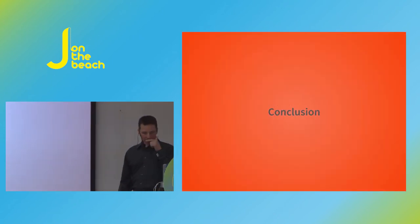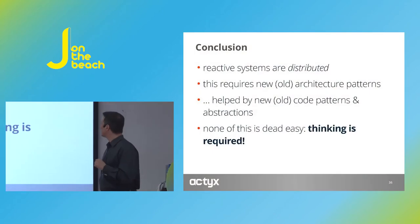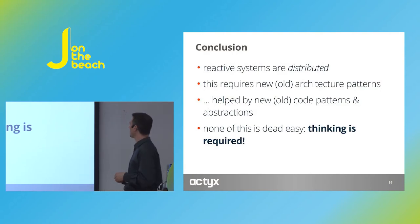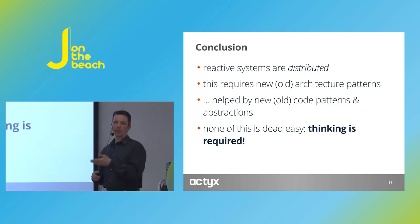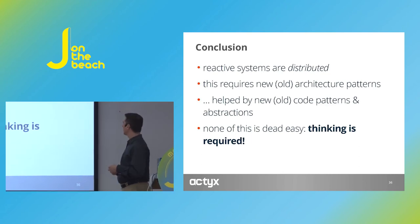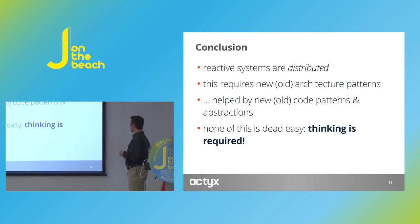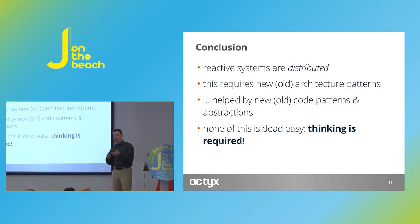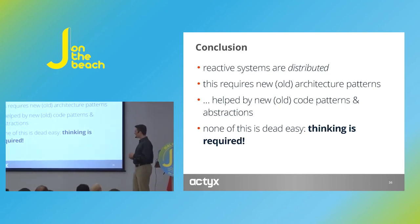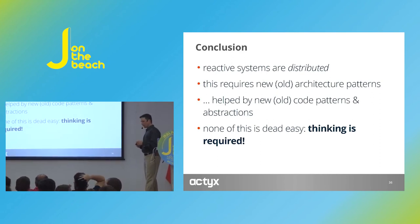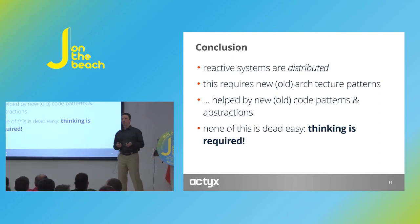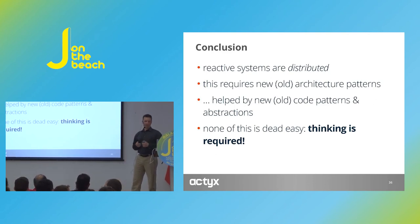So, to conclude: reactive systems are in their nature distributed for various reasons, as I pointed out. This requires some architecture patterns — for some they might be new, but most are actually quite old. They are helped by some new or old code patterns and abstractions that have been rediscovered or discovered a long time ago. The point is: distribution is not easy, but you can actually think about it, and you have tools to tackle it. Thank you.